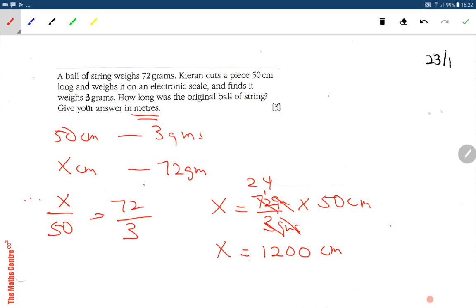Put back a zero—120 cm. Since they want it in meters, divide by shifting the decimal two places. So your answer is 12 meters.